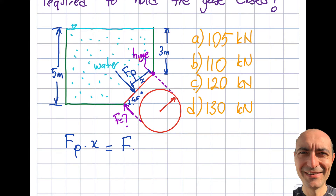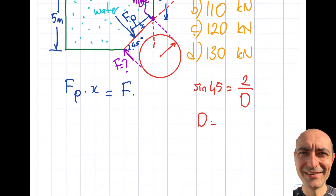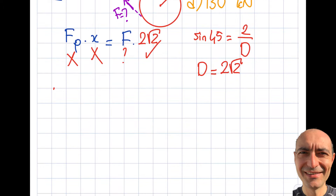To find that distance, you can see this is at 45 degrees, and this height is 2 meters — because the depths are given as 3 and 5, so the difference is 2. So sine of 45 equals 2 divided by d, where d is the diameter of the circular gate. From here, d equals 2√2, so the radius r equals √2. Now I have two unknowns: x and Fp.